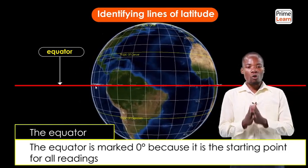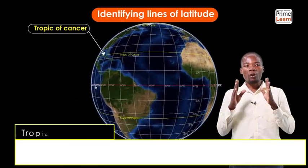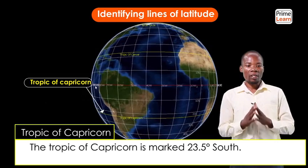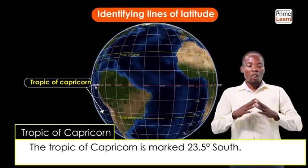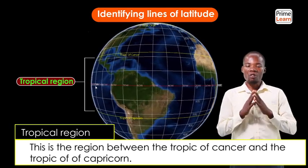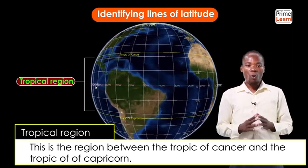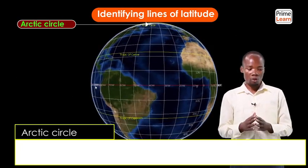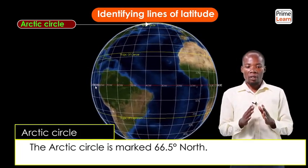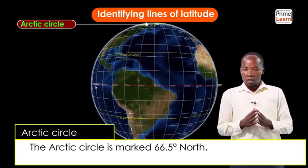We also have two other major important lines that cross the continent of Africa. The Tropic of Cancer is marked 23½ degrees north, and the Tropic of Capricorn is marked 23½ degrees south. The region between the Tropic of Cancer and the Tropic of Capricorn is known as the tropical region. The fourth line is the Arctic Circle, marked 66½ degrees north, and the fifth is the Antarctic Circle, marked 66½ degrees south.